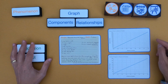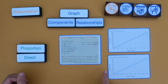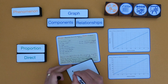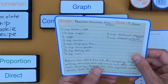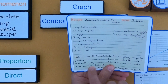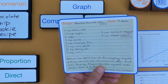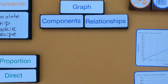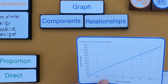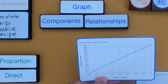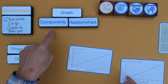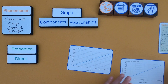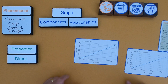For the first graphs, we have a relationship between flour and cookies, and sugar and cookies. The phenomena is a chocolate chip cookie recipe designed to make four dozen cookies with many different ingredients. That's the phenomena we're digging into. We're going to look at two graphs: graph one has dozens of cookies on the x-axis and grams of flour on the y-axis.